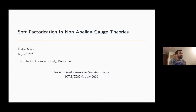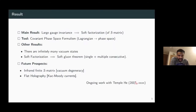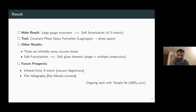Today I'm going to talk about soft factorization in non-abelian gauge theories. I'm going to impose large gauge invariance on the S-matrix and show that imposing this leads to what I'm calling soft factorization. The tool I'll be using for this is the covariant phase space formalism — that's essentially going to be a large part of the first half of my talk, where I'll explain what this formalism is and how it applies.